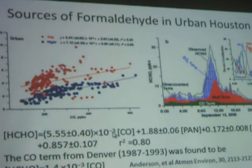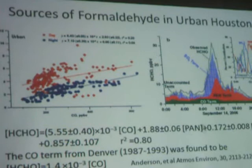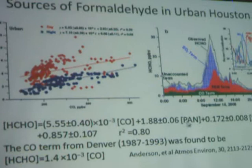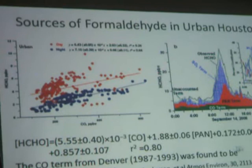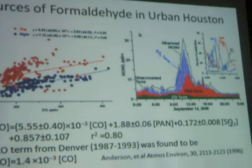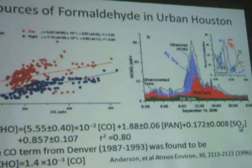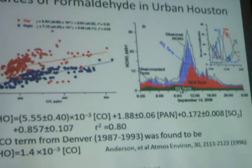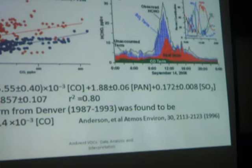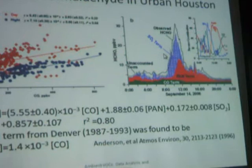The tracers used include carbon monoxide, and peroxyacetyl nitrate (PAN), which is a secondary product related to formaldehyde — it should be chemically generated from formaldehyde. There is also a small part related to SO2, which is another industrial source. This shows the partitioning between vehicle-related formaldehyde from CO and industrially produced formaldehyde in a straightforward way.